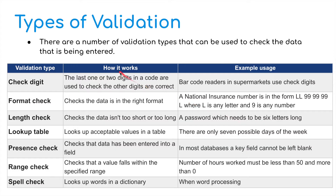There are different types of validation. First of all, check digit: the last one or two digits in a code are used to check the other digits are correct. Barcode readers in supermarkets use check digits.